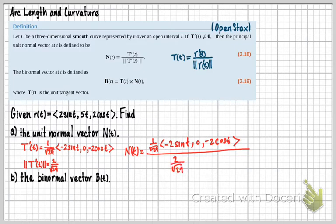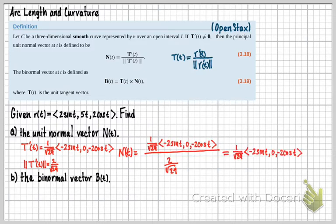Now keep in mind when I'm dividing with a fraction there, I flip and multiply. So that's going to result in times square root of 29 over 2. So we see that those cancel right away. And also all of these twos do. Those would be on top. That would be on the bottom. They all cancel. And we end up with negative sine T, 0, negative cos T.